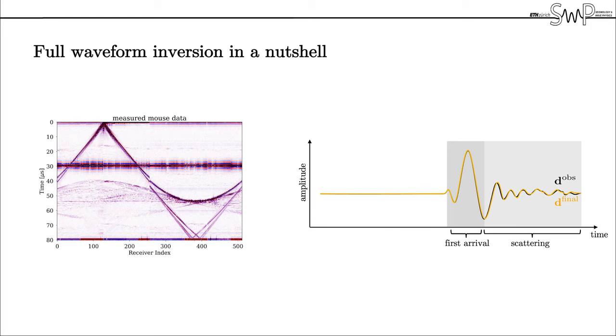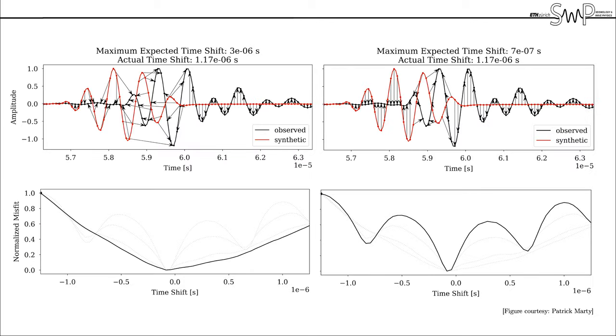To this end a misfit functional meaning a definition of how to measure the difference between the observed and the synthetic data is needed. And actually the specific choice of the misfit functional is very important when it comes to solving highly non-convex inverse problems. Here we choose an optimal transport misfit functional in its graph space description and on this slide I want to visually illustrate the key features of this misfit functional.